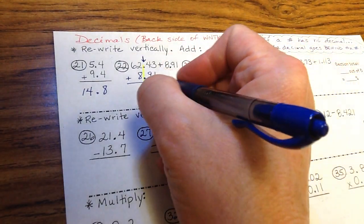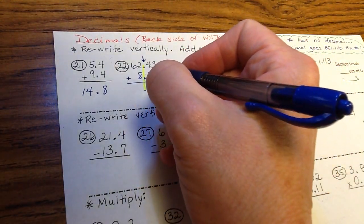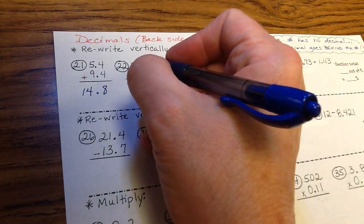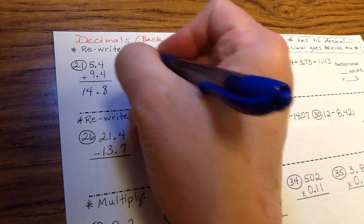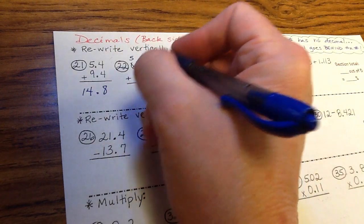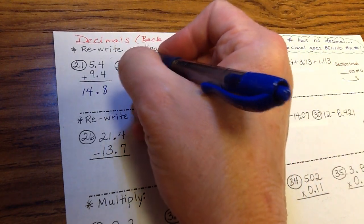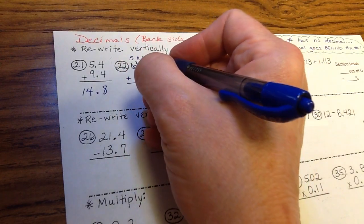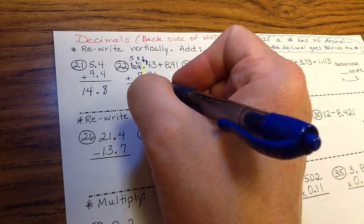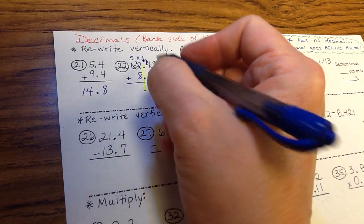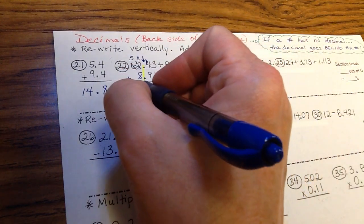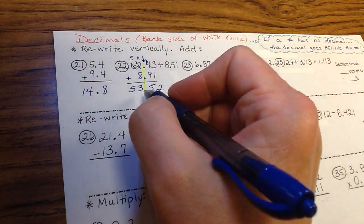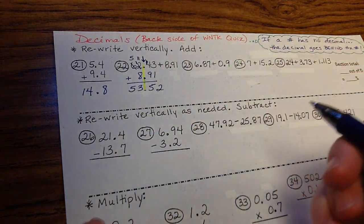3 minus 1 is 2. 4 taking 9 away won't work, so you're going to have to borrow, but the neighbor doesn't have enough, so you're going to have to borrow here. Cross out, 1 less 1. 4 can borrow from the 12 now. 12 is cross out, 1 less 1. So now you've got 14 minus 9 is 5. 11 minus 8 is 3. And 5 minus nothing is 5. 53.52.